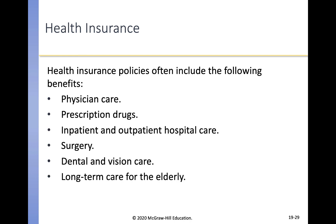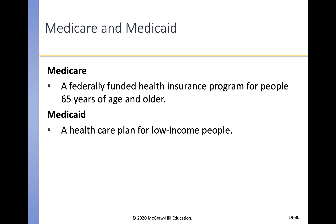Moving on to health insurance. Health insurance policies often include physician care, prescription drugs, inpatient and outpatient hospital care, surgery, dental and vision care, and long-term care for the elderly. Many people obtain health insurance through a group plan from their employer, but you can also buy an individual plan from an insurer or through the government marketplace. Medicare is a federally funded health insurance program for people 65 and older. Medicare Part A helps pay for inpatient hospital care, and Part B pays for 80% of doctors and other medical services. Many people buy Medigap insurance to cover the remaining 20%.